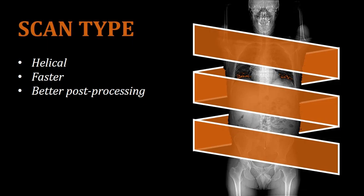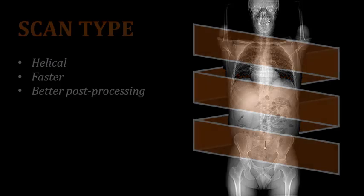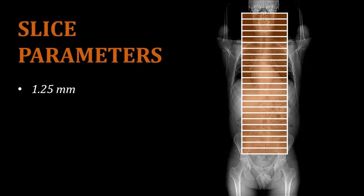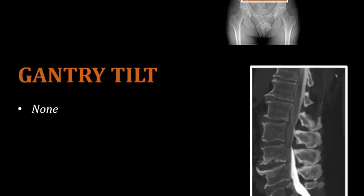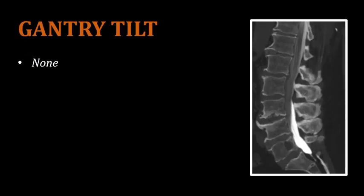Like most CT scans, the recommended scanning type is helical, which allows for a faster scan and better post-processing options. For all levels of the spine on a CT myelogram protocol, we would be constructing slices into 1.25 millimeters. This allows for very high spatial resolution, which is important when evaluating the spine for spinal impingement and disc disease. For the myelogram protocol, there is no need to tilt the gantry.